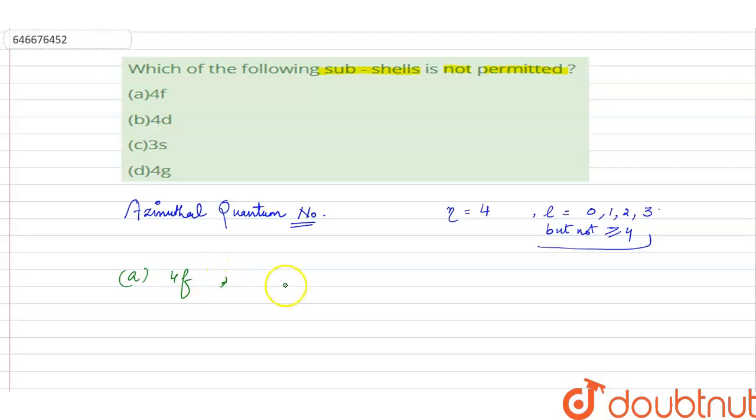4f shell means value of n equals 4, and subshell means value of l. As it is f, so its value is 3.